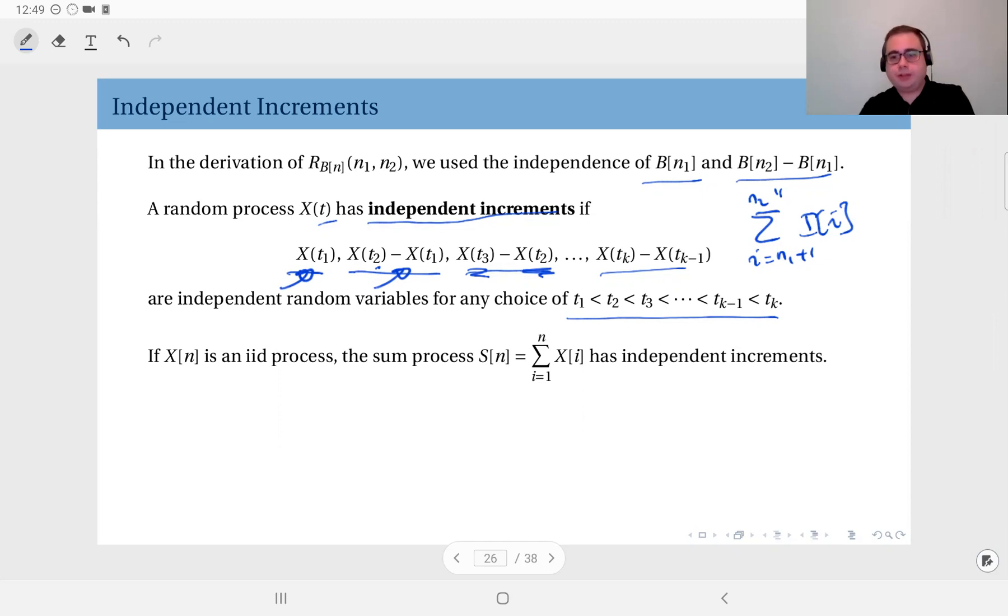For any choice of these tks preserving this order, if these increments are independent, for any choice of the t values, then we say this random process has independent increments.